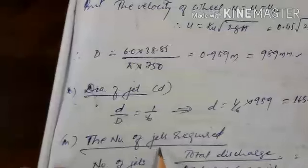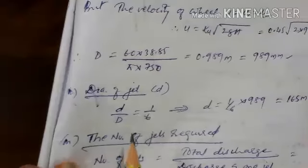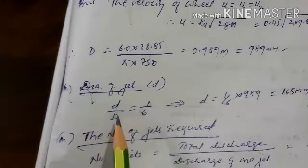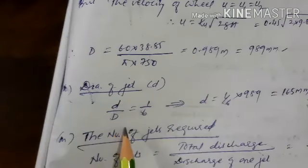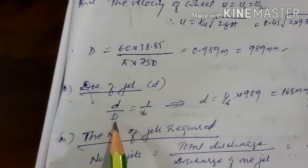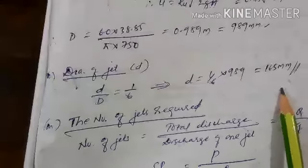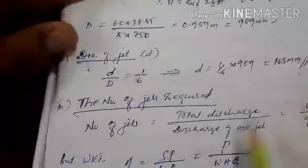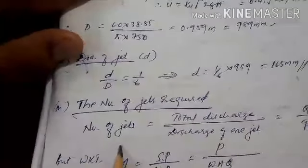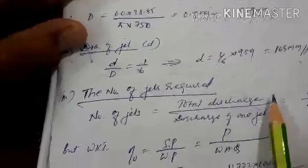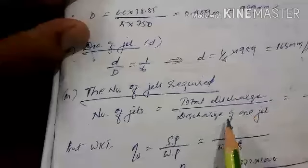The diameter of jet can be easily calculated because we know the jet ratio: jet diameter divided by wheel diameter = 1/6. Since wheel diameter is now known, the jet diameter can be easily calculated as 165 millimeter. The number of jets required equals total discharge divided by the discharge of one jet.